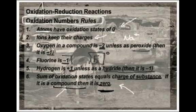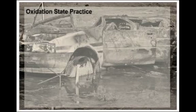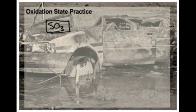The sum of oxidation states equals the charge of the substance. If it is a compound, then it's zero. So we're just going to do a number of example problems. Those rules are all in your handouts. If you're out there in internet land and you don't have our handouts, just hit pause, write them down, learn them. So let's do a couple of examples. I am going to choose the compound sulfur trioxide. We want to assign oxidation numbers to each element in sulfur trioxide.